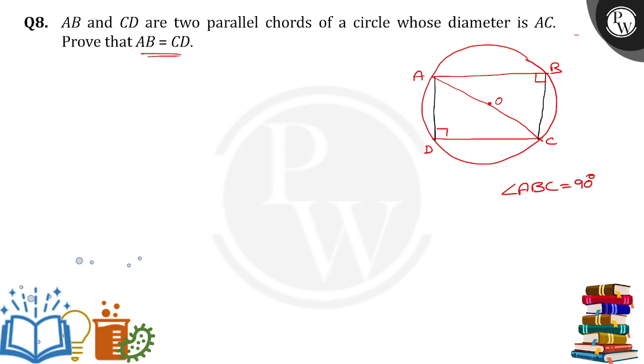And here also, AC will divide the circle into two parts. So this is one part of the semicircle and this is another part of the semicircle. So angle ADC is also equal to 90 degrees.